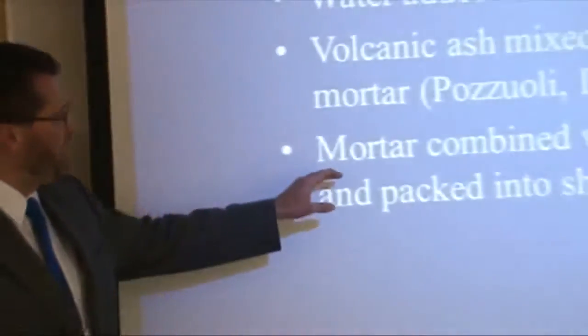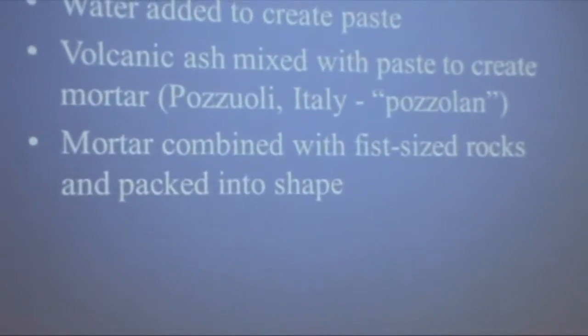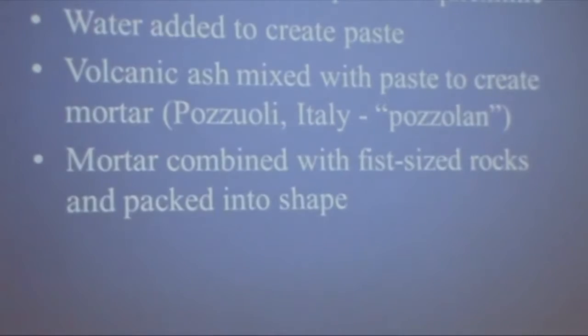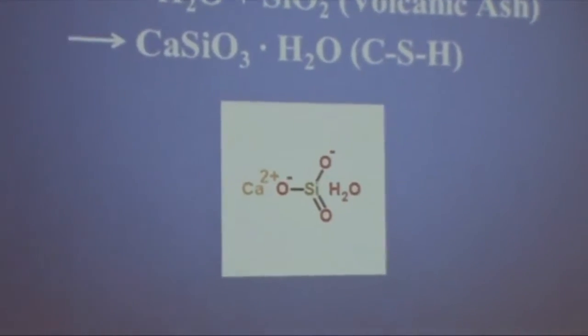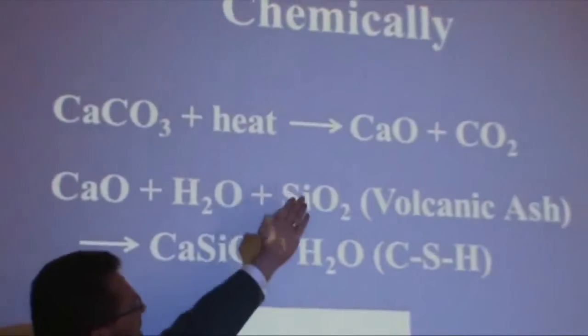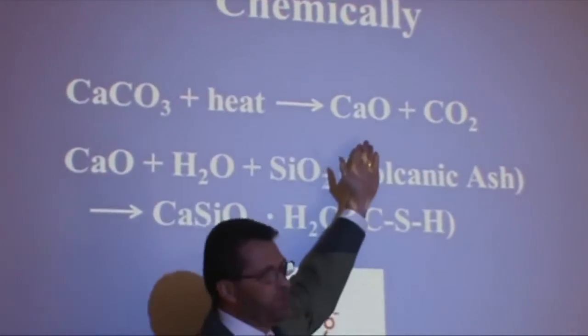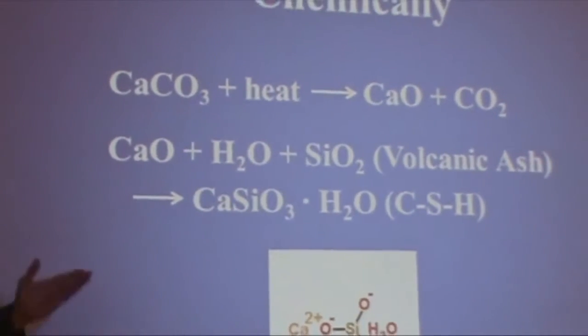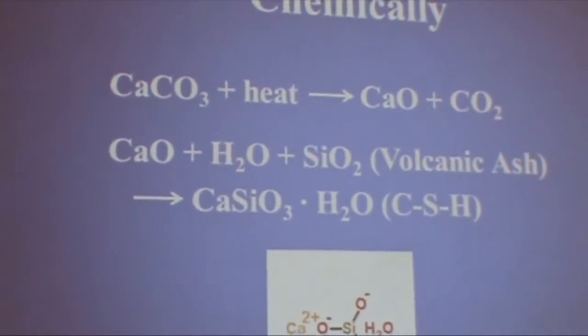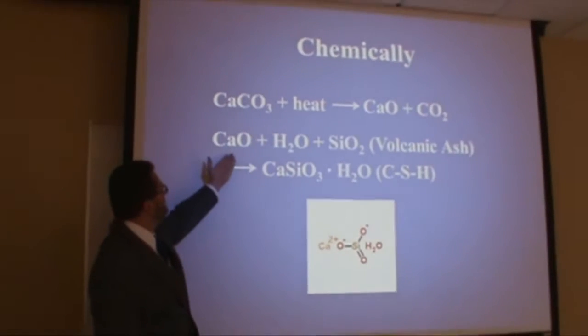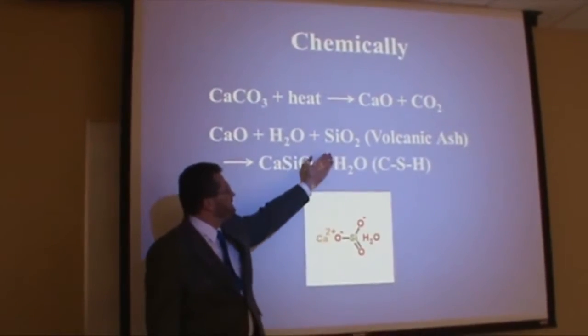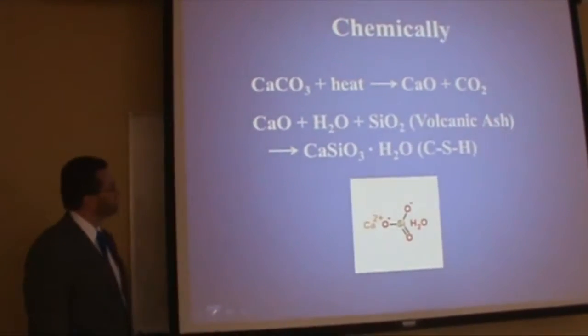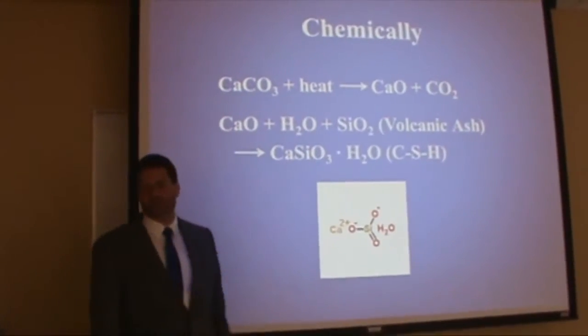That mortar was combined with fist-sized rocks and shaped into structures. Chemically: calcium carbonate is heated to produce quicklime (calcium oxide) with carbon dioxide emission. That calcium oxide is combined with water and silicon oxide from the volcanic ash to create calcium silicate hydrate (CSH), which is one of the three main ingredients in modern-day Portland cement.